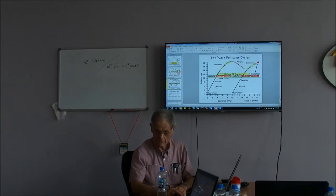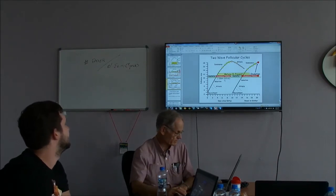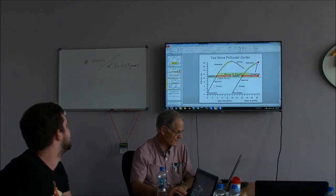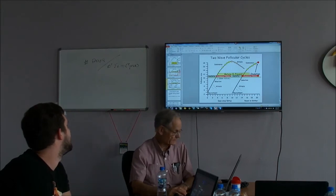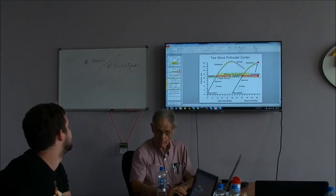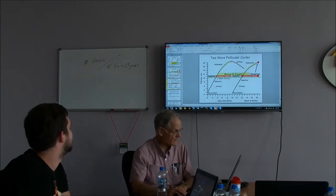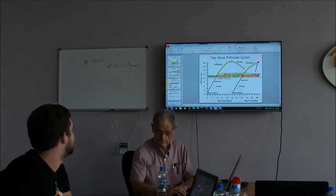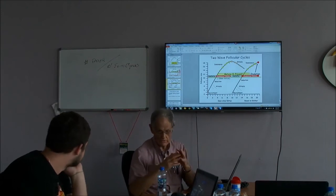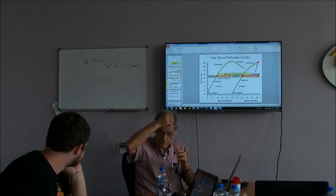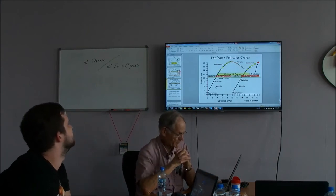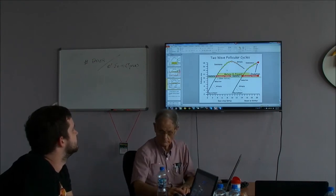Here and here we have ovulatory follicles. If here at day six as an example we give prostaglandin, we will kill the CL. And this follicle, instead of dying and going away, will go ahead and ovulate. That ovulation is a fertile ovulation. If sperm is there, she can conceive. Pregnancy can happen and it's normal ovulation.